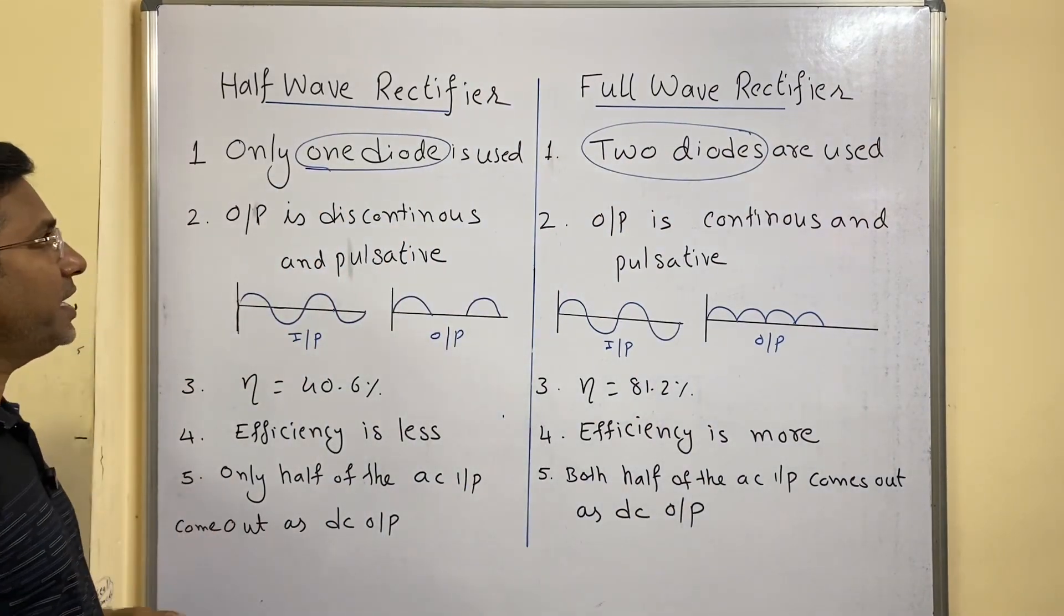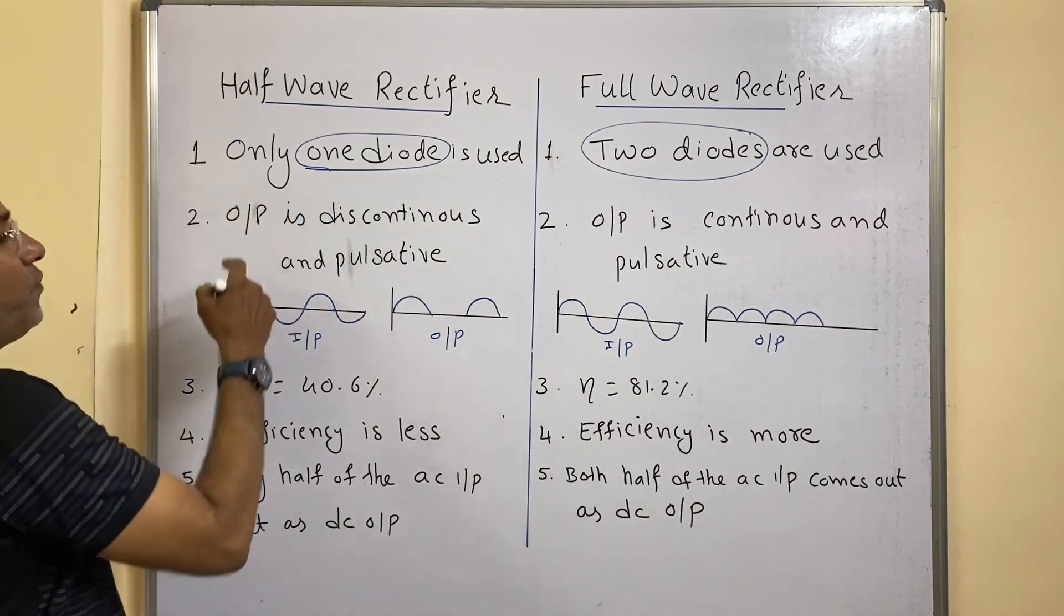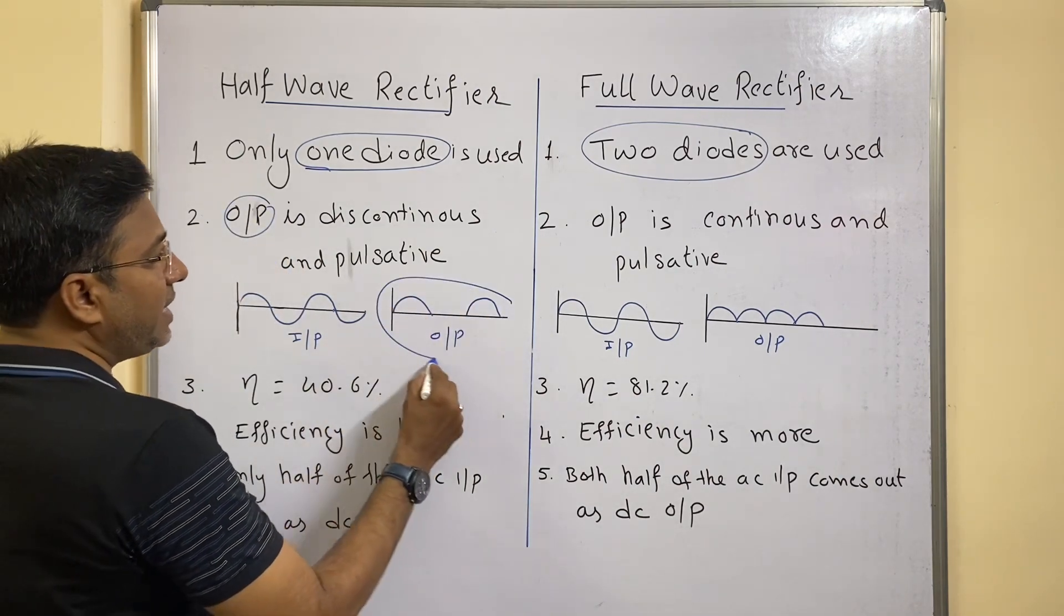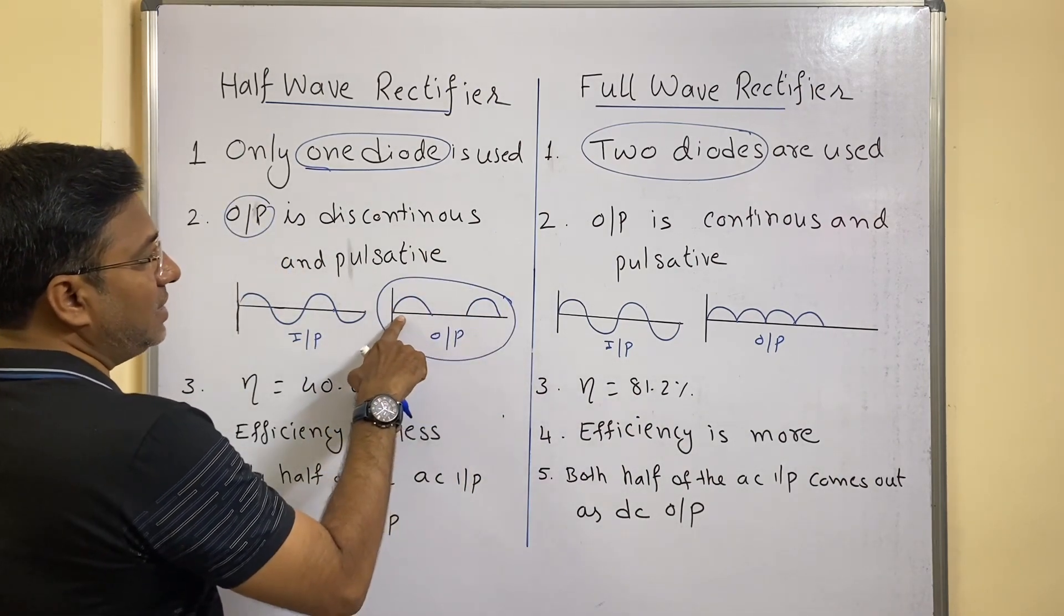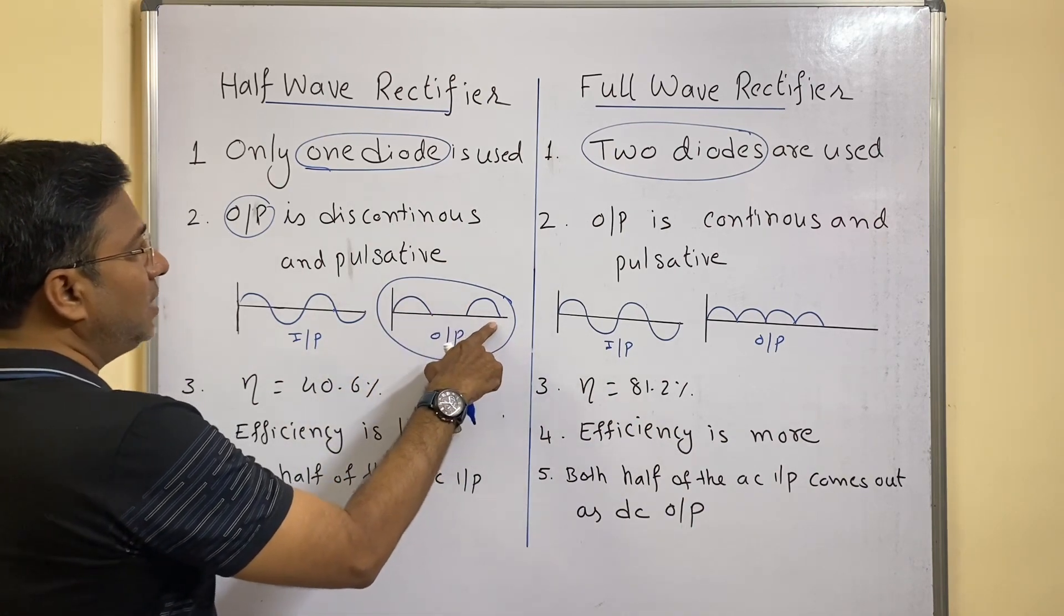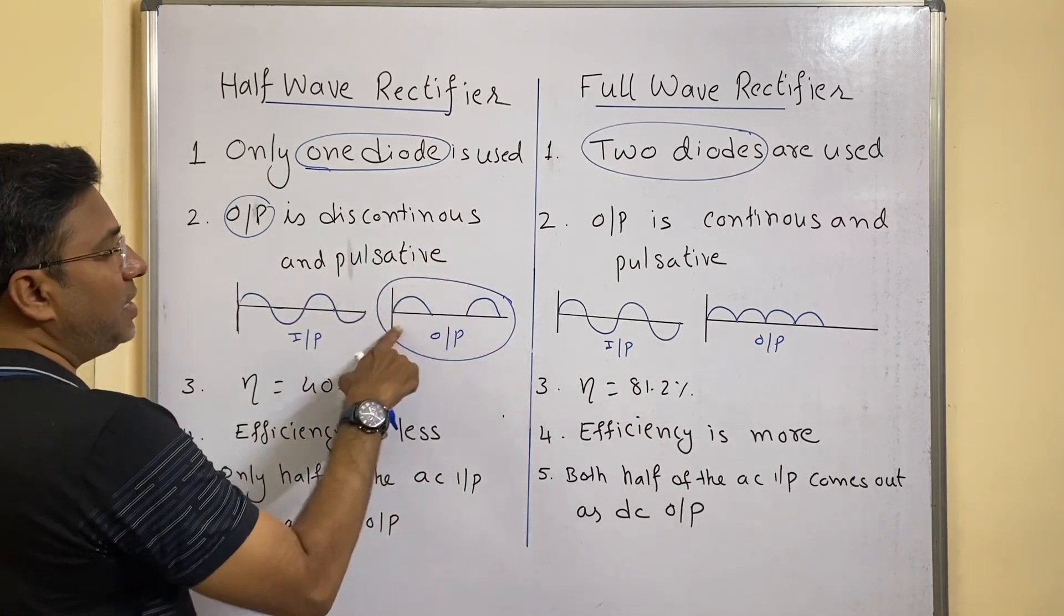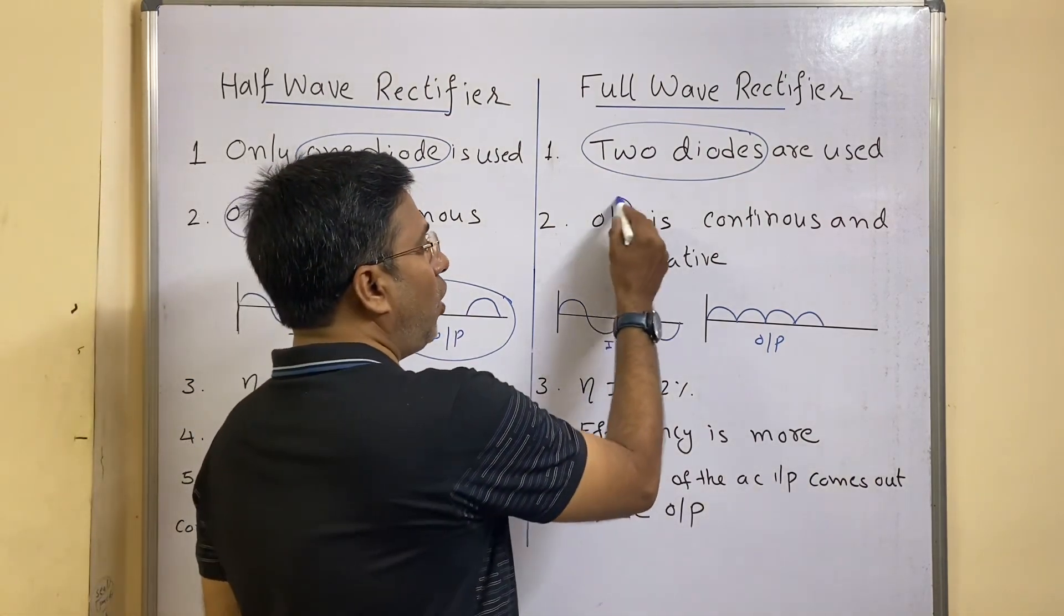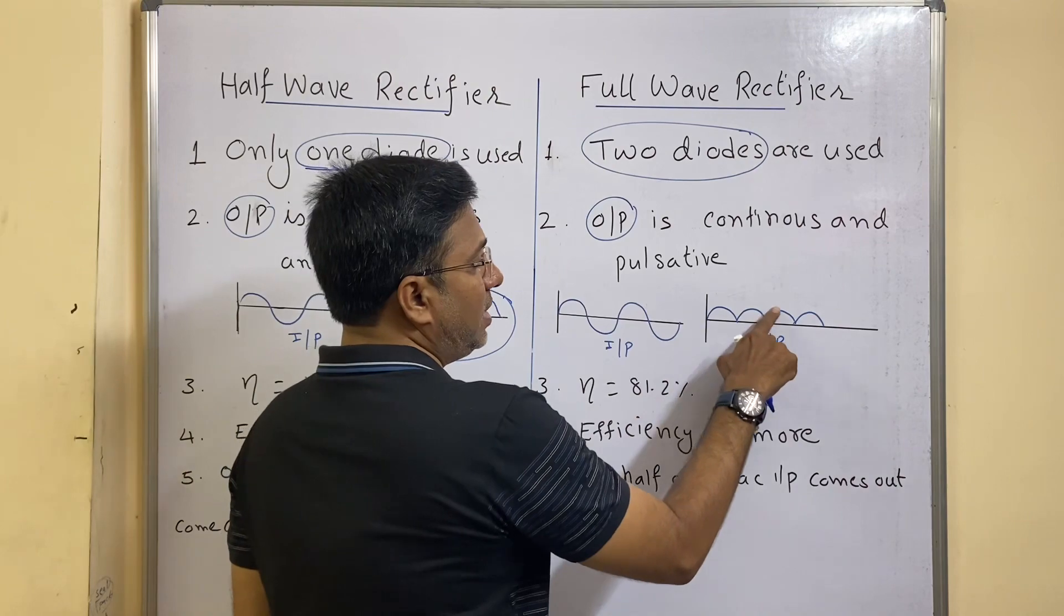Let us see the second point. In case of half wave rectifier, the output is discontinuous and pulsative. It is not continuous—one pulse and then gap, one more pulse. That means it is discontinuous but there are certain pulses. In case of full wave rectifier, the output is continuous. You can see here continuous output is there and it is positive.